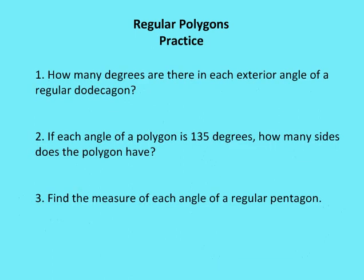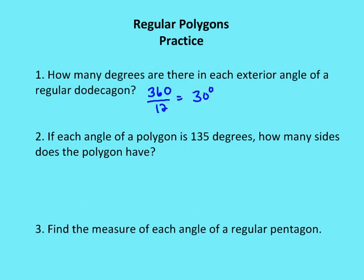First question: how many degrees are there in each exterior angle of a regular dodecagon? Using E equals 360 divided by N, and since a dodecagon has 12 sides, E equals 360 divided by 12. Each exterior angle is equal to 30 degrees.